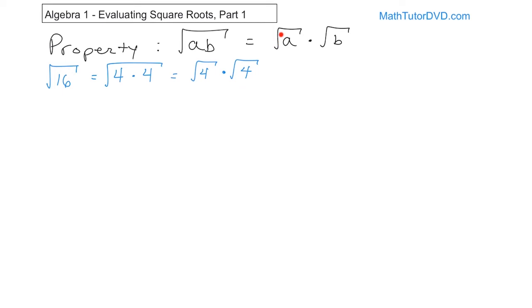This property tells you that if you have things multiplied under a radical, you can break the radicals up and make this the square root of 4 times the square root of 4. When I write my square roots, I always put a hook at the end — that tells me where my square root ends, so you don't get confused about where it stops. So the square root of 4 times the square root of 4: what is the square root of 4? 2 times 2 is 4, so that's 2 times 2, which equals 4. You started with the square root of 16 and using this property you figured out the answer is 4.